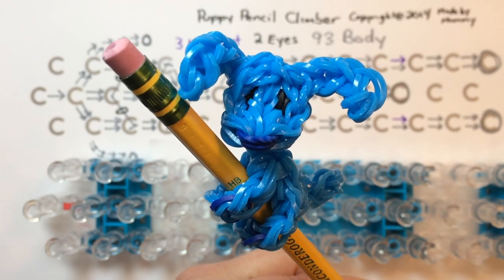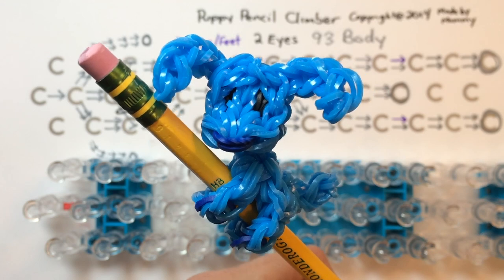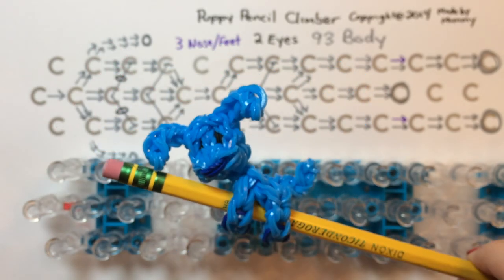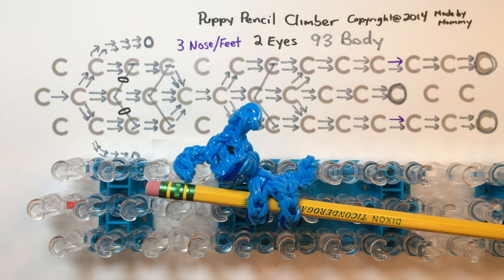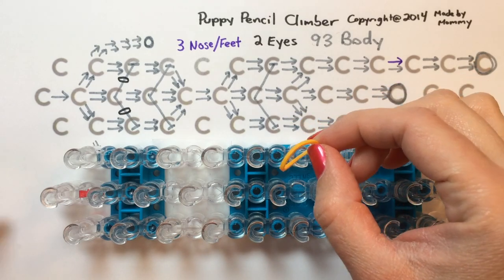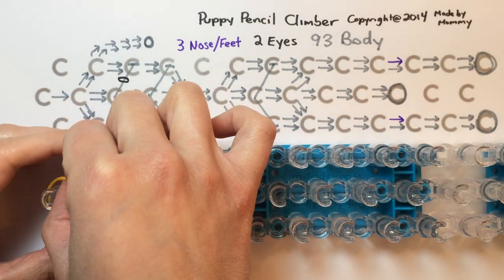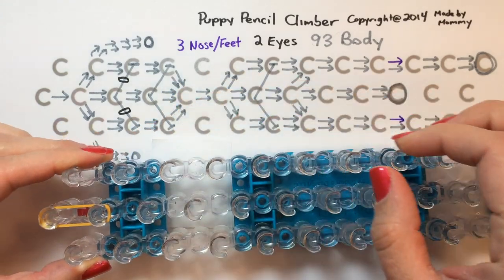Hi, this is Made by Mommy and today I'm going to teach you how to make this puppy pencil climber using the rainbow loom or any loom that you have that is set in the staggered position. You'll need 93 rubber bands in the color of the body, 3 for the nose and feet, and 2 for the eyes. To begin, take one rubber band in the color you want the puppy to be and place it where the arrow is going forward in the center row.